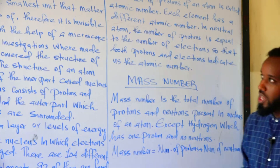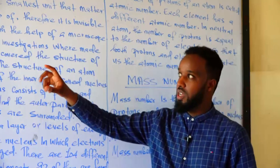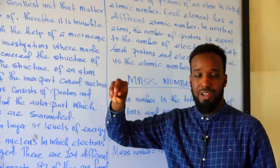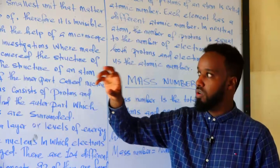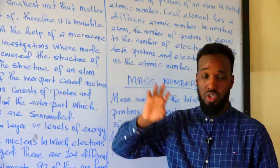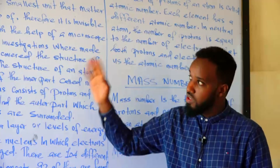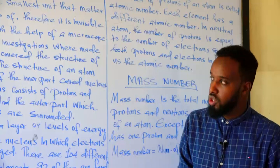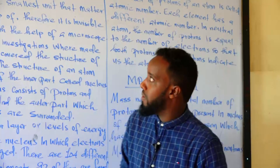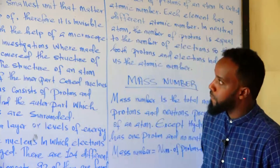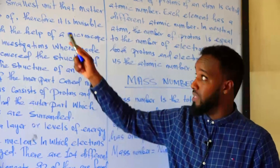To summarize the charges of sub-atomic particles: the electron is negative, the proton is positive, and the neutron is neutral. The mass number is the total number of protons and neutrons.